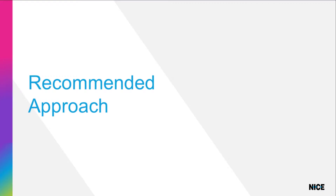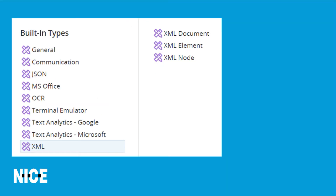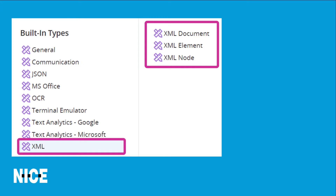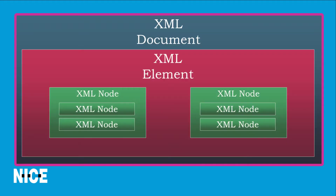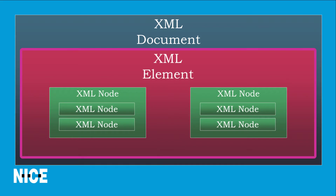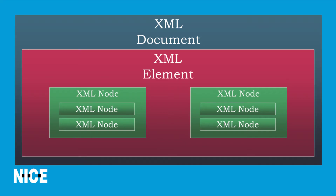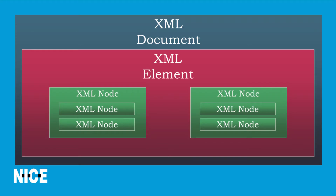Before we start, let's look at an outline of the approach we will follow. Automation Studio provides three types of XML objects: the XML document, XML element, and XML node. These types form a hierarchy where an XML document includes an XML element, which in turn includes one or more XML nodes. The XML nodes can in turn include other nodes that we will call sub-nodes.